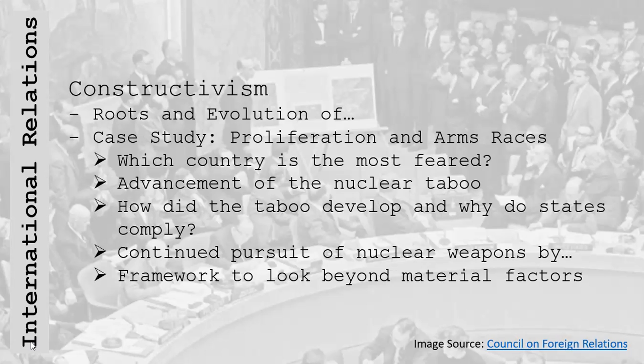How did the taboo develop and why do states comply? It emerged during the height of U.S. hegemony in stages. From 1945 to the 1970s, the international community faced nuclear testing by major powers as well as international confrontations — the Cuban Missile Crisis, for example, addressed at the United Nations in 1962 during the Kennedy administration. Along with the memories of atomic weapons in World War II, this provided a framework for non-use.